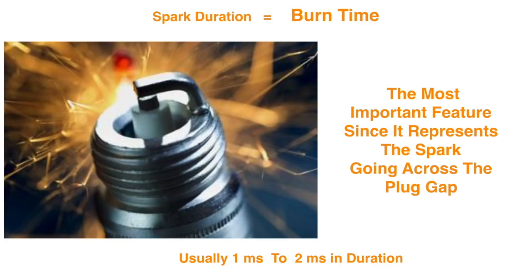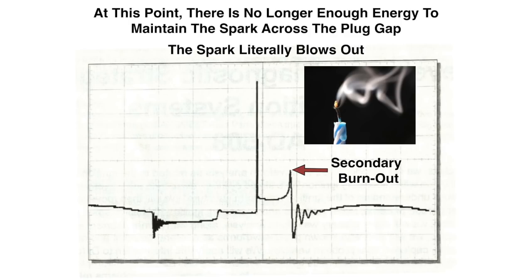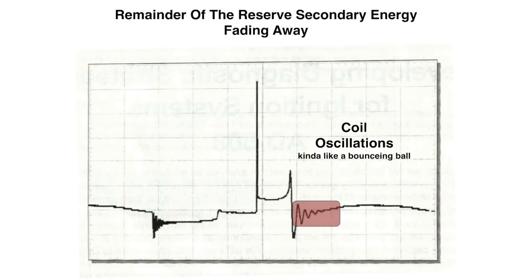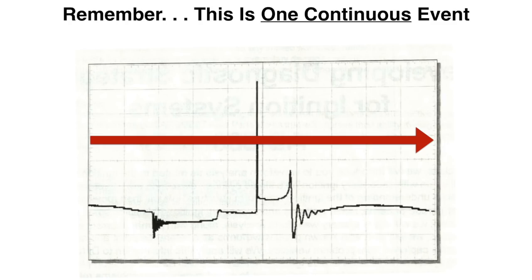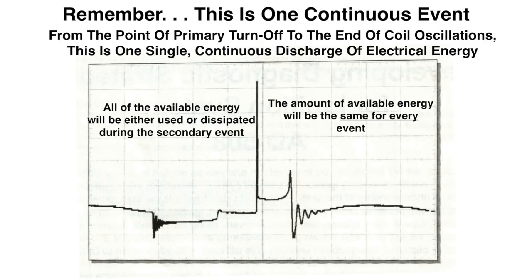Here is our secondary burnout — the secondary burnout is where the spark literally blows out. At this point there is no longer enough energy to maintain the spark across the spark plug gap, and the flame just literally blows out. These are coil oscillations — it's kind of like a bouncing ball. The first bounce is always stronger and then decreases over time. The rule of thumb is two to four bounces; no bounces indicate a very weak coil. This is one continuous event from primary turnoff to the end of the coil oscillations — one single continuous discharge of electrical energy.